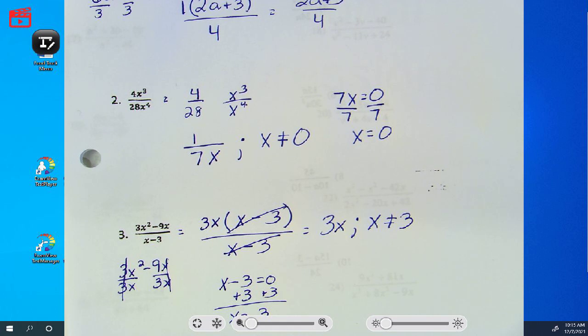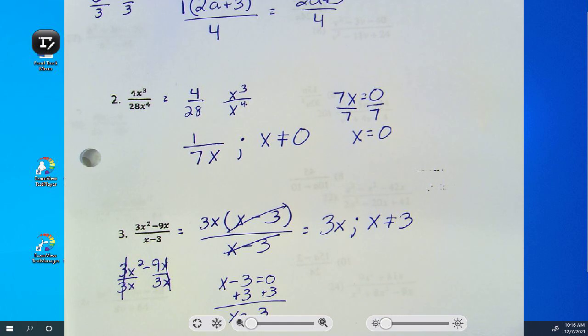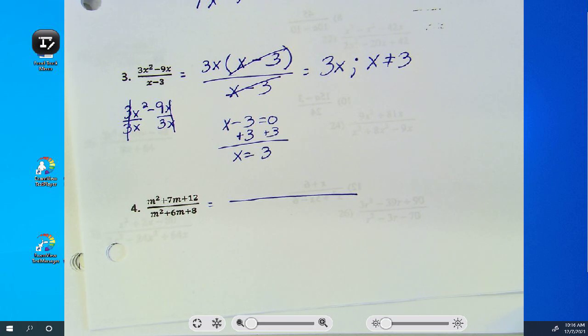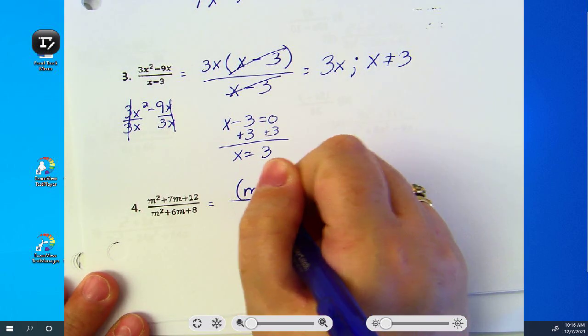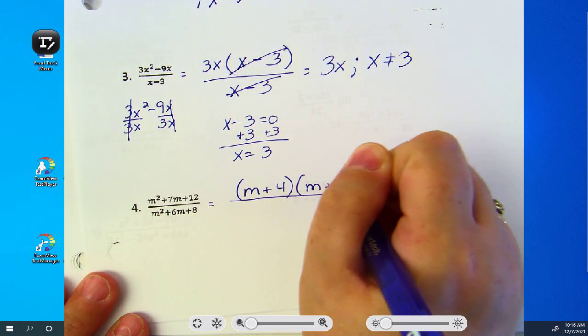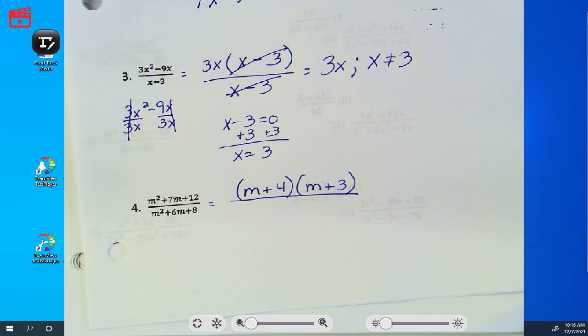Number four. Is there a GCF? No. Is there two or three terms? Three, so we got to find factors of twelve to add up to seven. Go ahead. Four and three. In the denominator, is there a GCF? No.